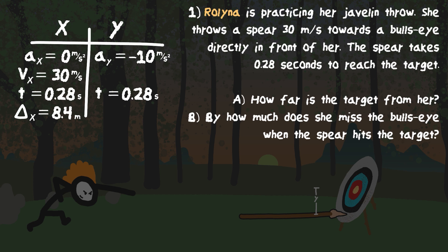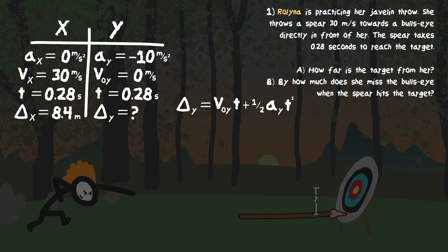We're looking for the displacement in the Y direction. We only have two pieces of information in Y, but here's the key: whenever something is thrown directly horizontally, we also know the initial velocity in the Y direction. If it's going completely horizontally, the initial velocity in the Y direction is zero meters per second. When using Y, only use Y variables; when using X, only use X variables — the only thing shared is time.